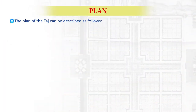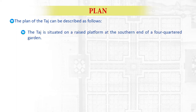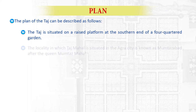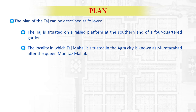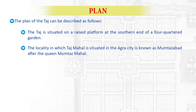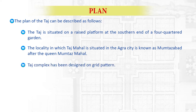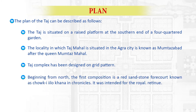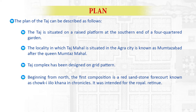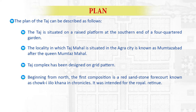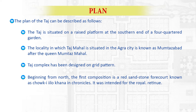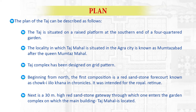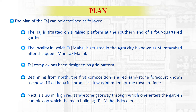If we go through the plan of the Taj, it can be described as follows. The Taj is situated on a raised platform at the southern end of the four-quartered garden. The locality in which Taj Mahal is situated in Agra city is known as Mumtazabad after the queen. The Taj complex has been designed on a grid pattern. Beginning from the north, the first composition is a red sandstone forecourt known as Chaukhampa Khana in chronicles. It was intended for the royal retinue. Next is a 30-meter high red sandstone gateway through which one enters the garden complex on which the main building, the Taj Mahal, is located.